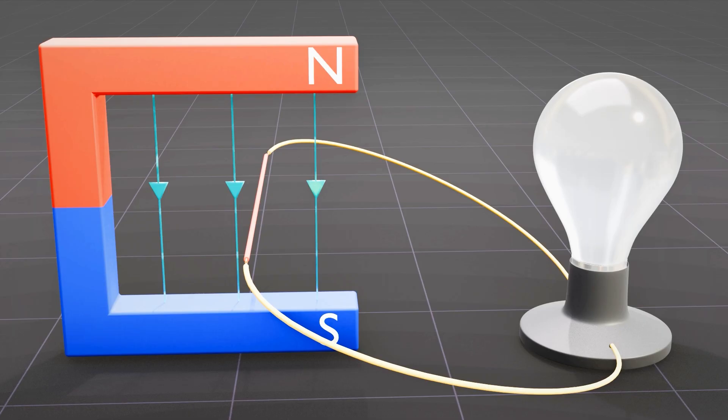This demonstrates that current is only generated when the wire intersects the magnetic field. Now that we understand the basics of electromagnetism and electromagnetic induction, let's see how these concepts work together to create a generator.